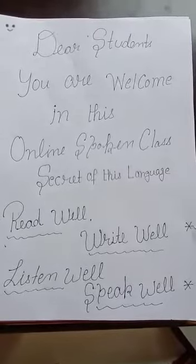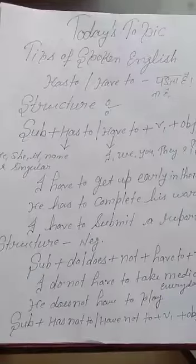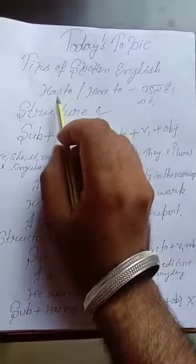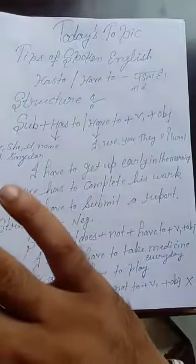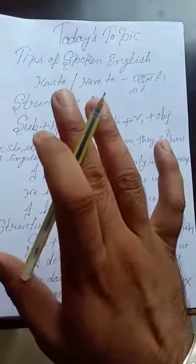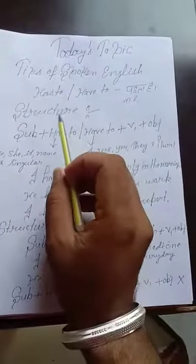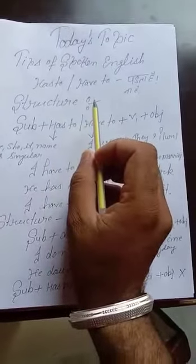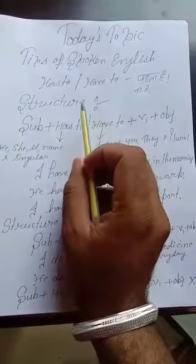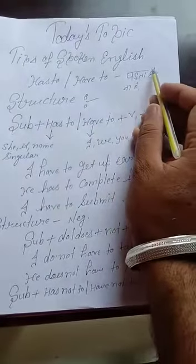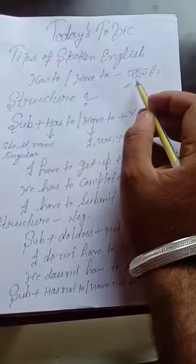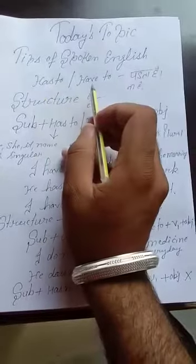What is this third structure? Today we shall discuss the use of 'has to' and 'have to'. From a translation point of view, if you find this word at the end of any sentence, that means we use 'has to' or 'have to'.